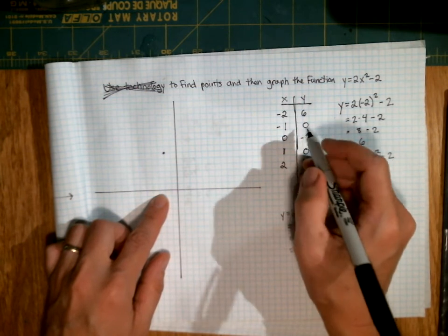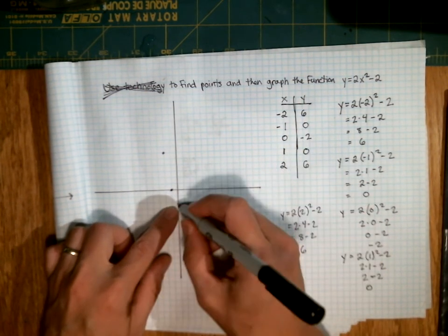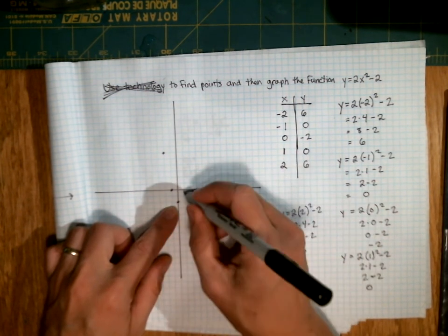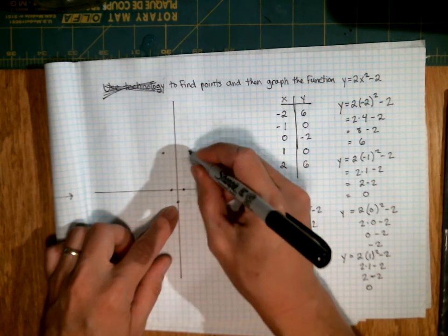Negative 1, 0 is right here. 0, negative 2 is down here. 1, 0 is right here. And 2, 6 is up here.